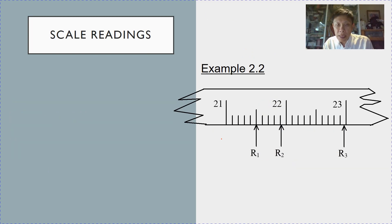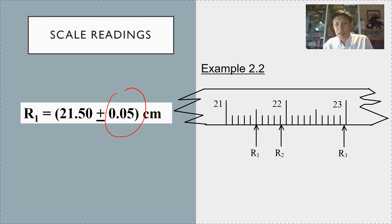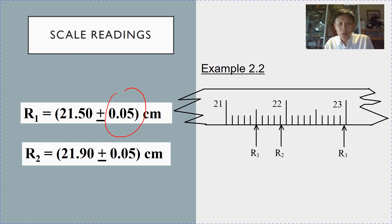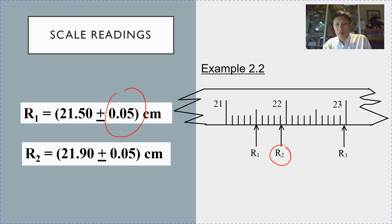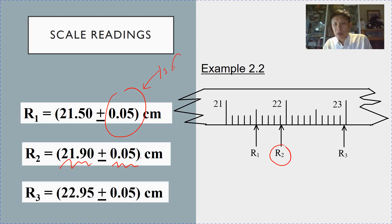Now take some time to try example 2.2. For reading one, the uncertainty is 0.05 because the smallest division is 0.1. Similarly for R2, the reading is 21.90 — note that this is 1 significant figure, and also note that the reading r is expressed to the same number of decimal places as the uncertainty. For R3, you should express it as 22.95 ± 0.05.